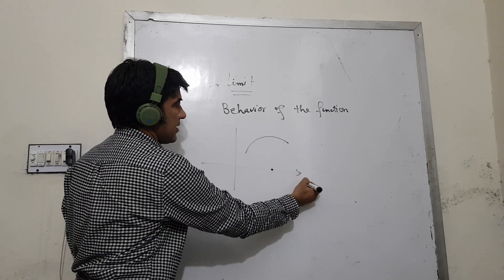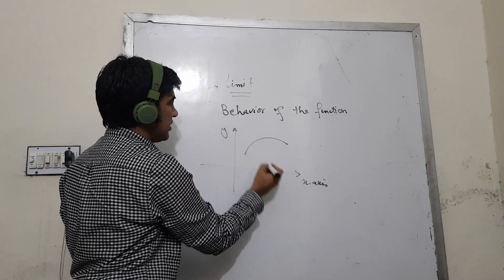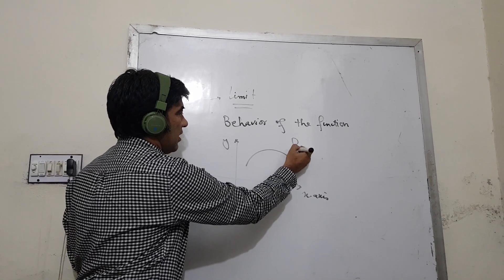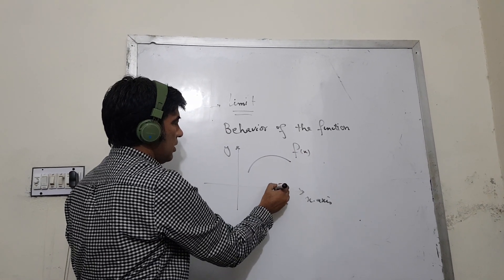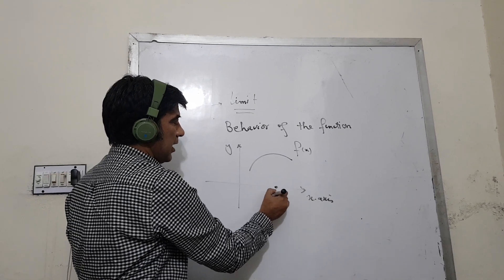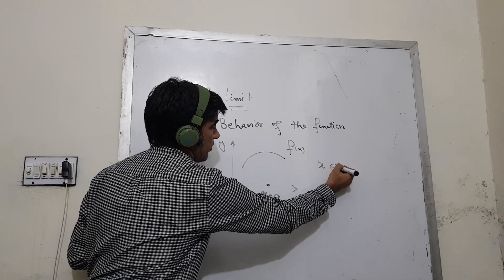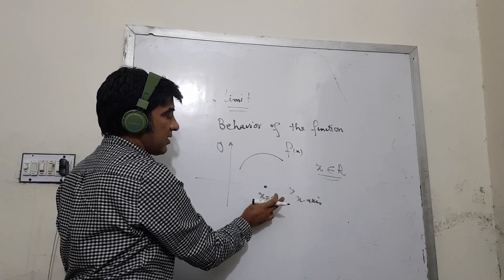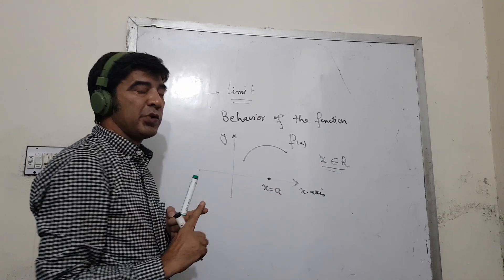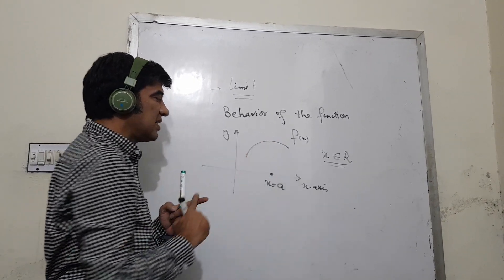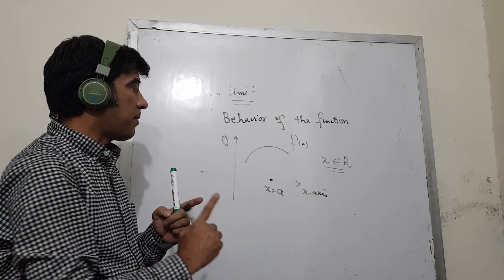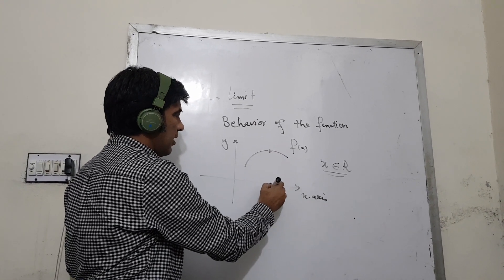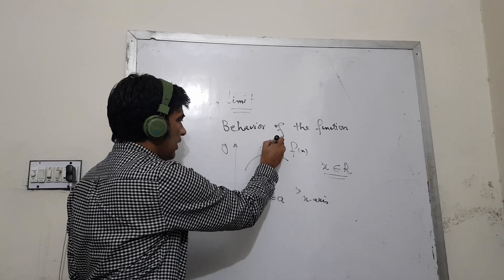Let's say this is the x-axis and this is the y-axis, and somewhere there is a value x equal to a, and this is the curve of the function. At this value of the domain, let's say my domain is the real numbers, and in this domain one real number is x equal to a. I want to see the behavior of this function nearby the value of the domain, that is x equal to a. When you take x equal to a, you are at a certain point and there is the value f(a).